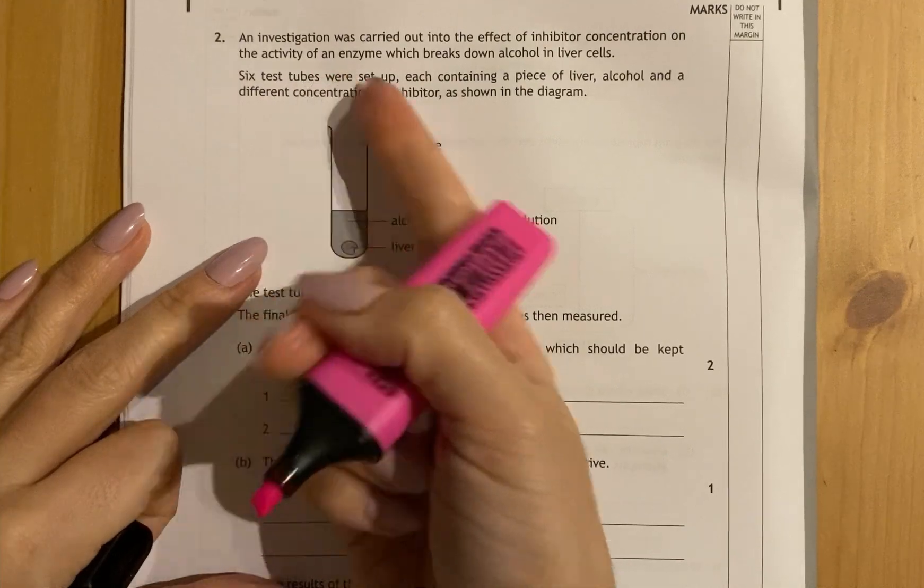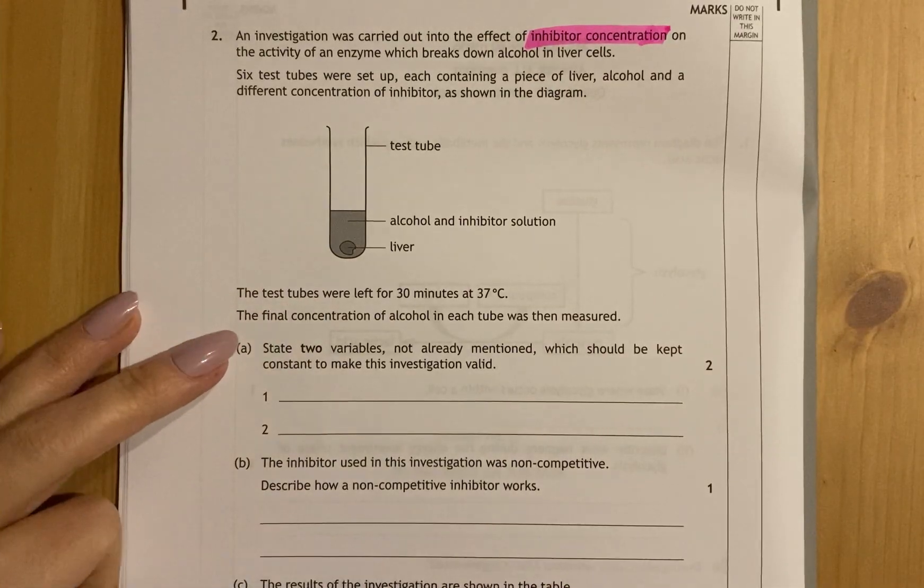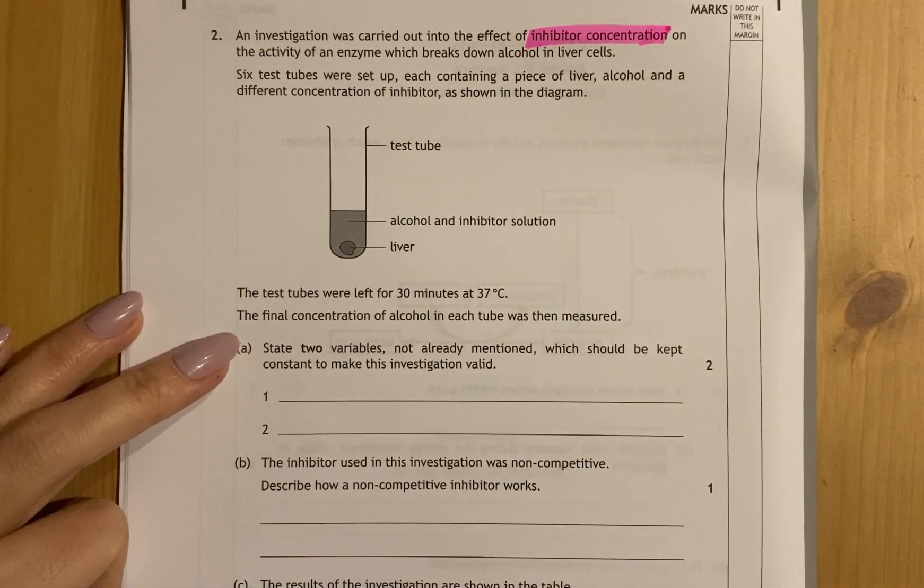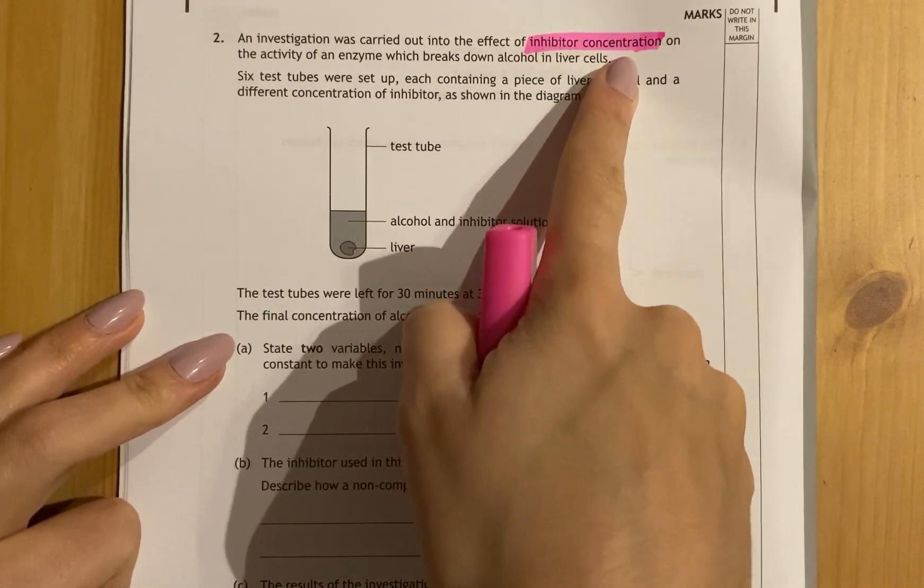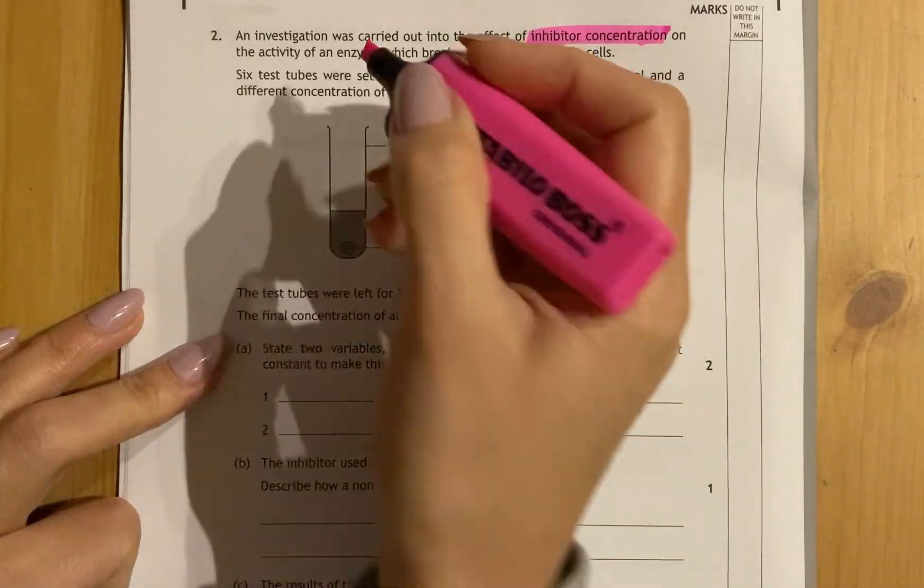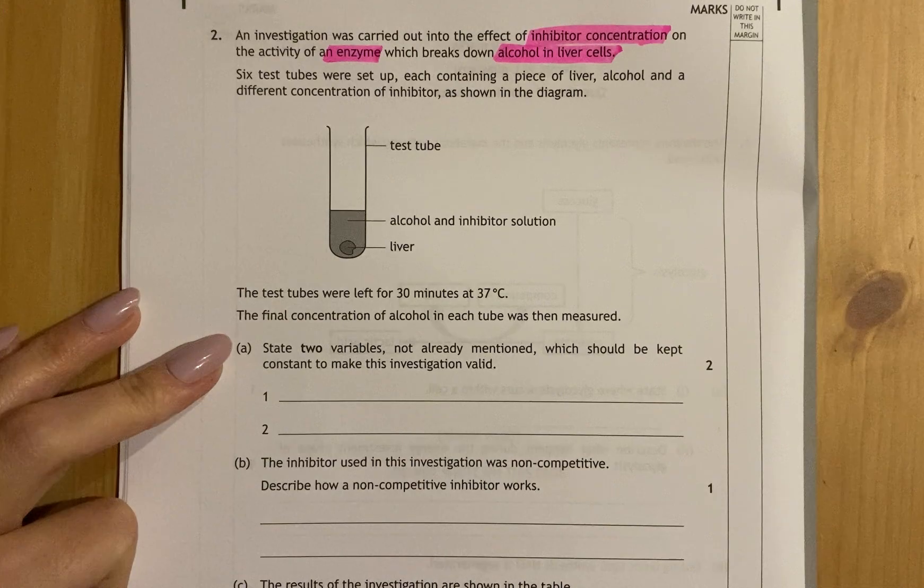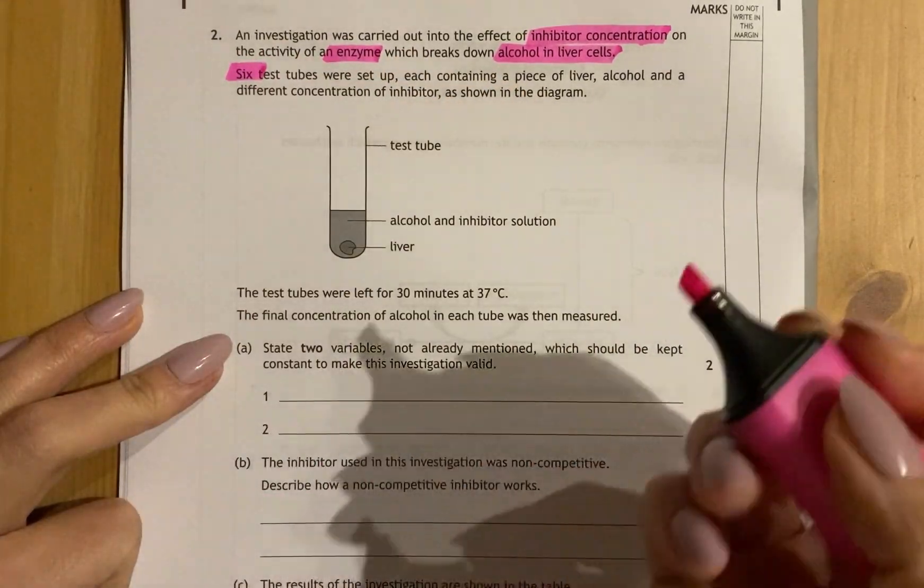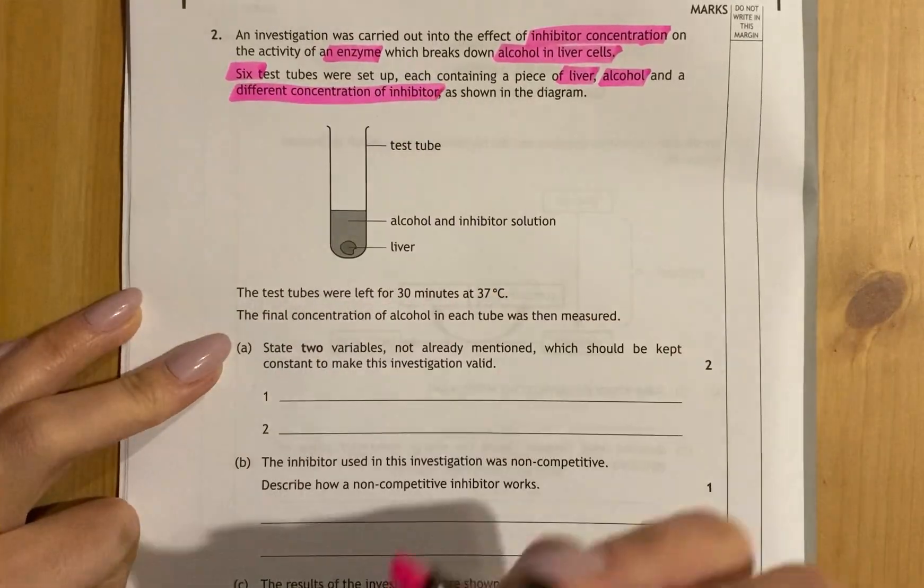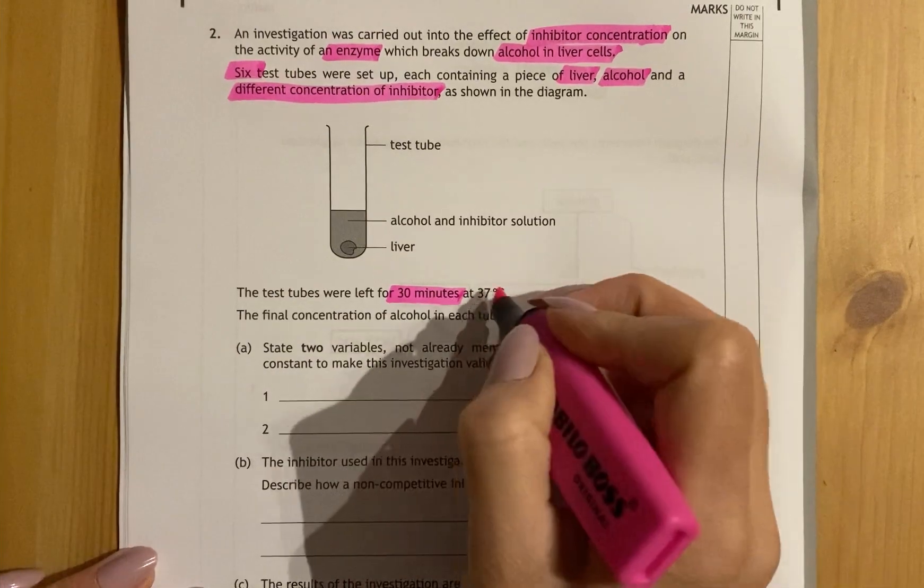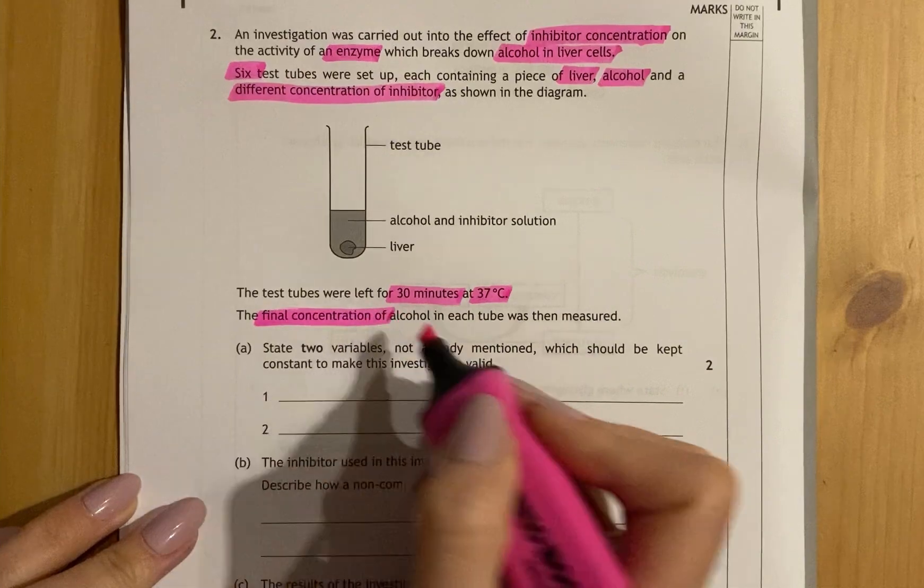An investigation was carried out to investigate the effect of inhibitor concentration. So they're changing the concentration of inhibitor, which is why they've got that on their x-axis or they will have on their x-axis in the graph and on the left hand side of the table. They're looking at what effect that inhibitor concentration has on the activity of an enzyme which breaks down alcohol in liver cells. So they set up six test tubes with a piece of liver, some alcohol and different concentrations of inhibitor. They were left for 30 minutes at 37 degrees and the final concentration of alcohol in each test tube was then measured.